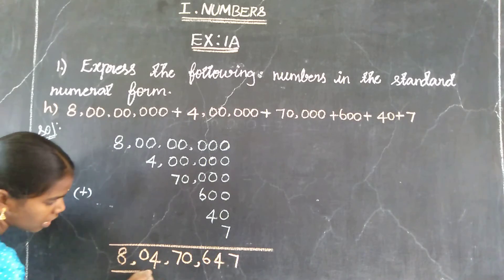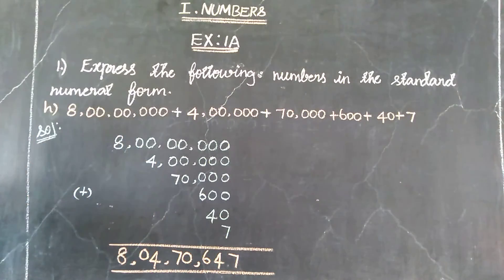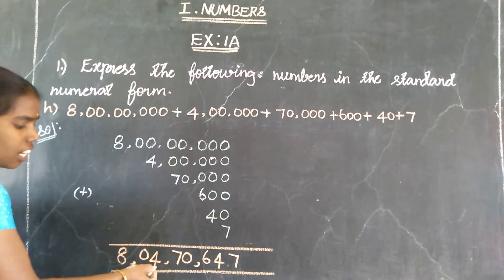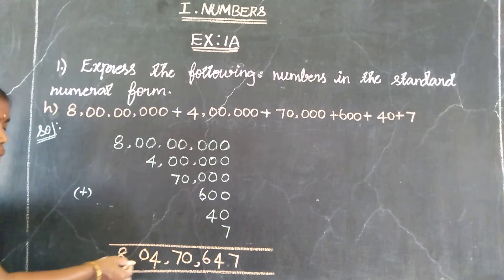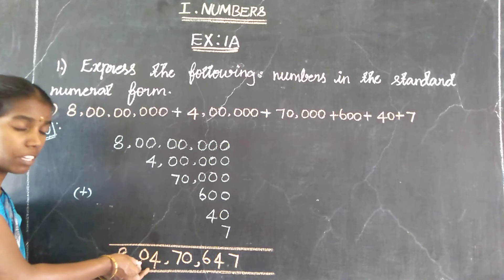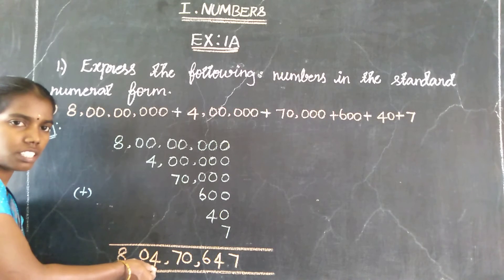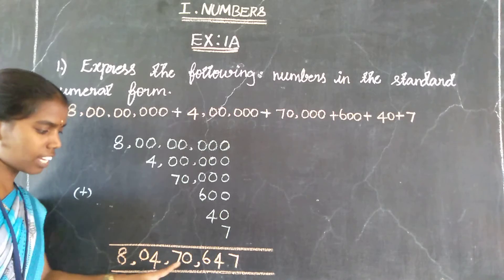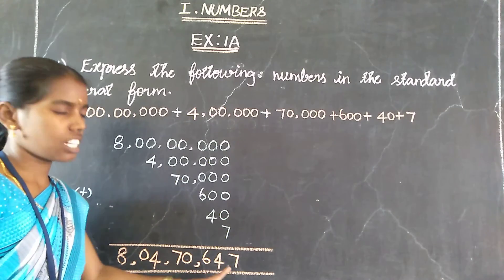This is the standard numeral form. So ones, tens, hundreds, thousands, ten thousands, lakhs, ten lakhs, crores. 8 crores. Then the lakh place, ten lakh place is 0. This is the lakh place value. So 8 crore, 4 lakh, 70,647.